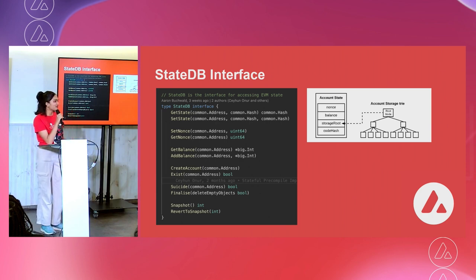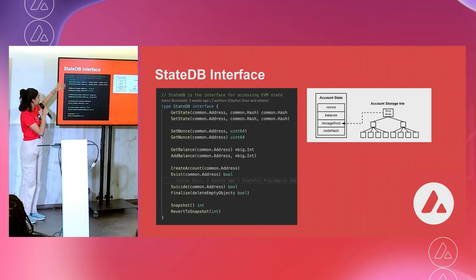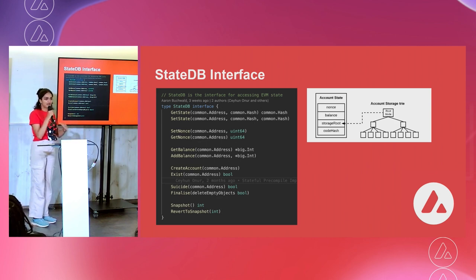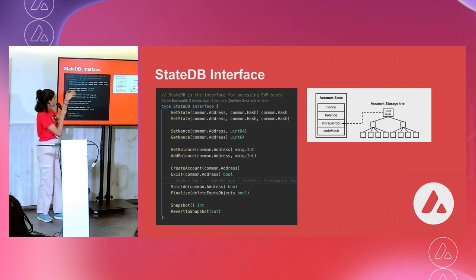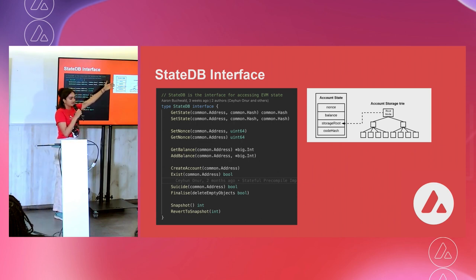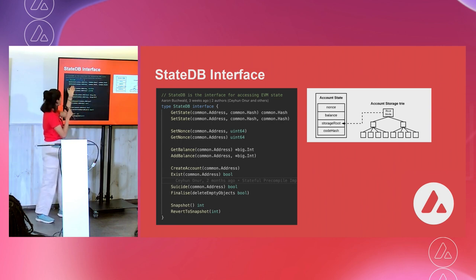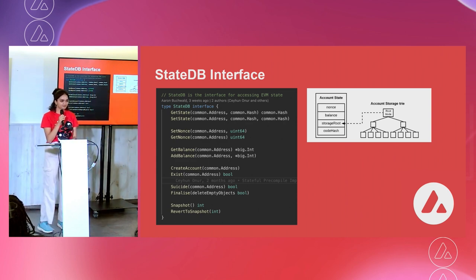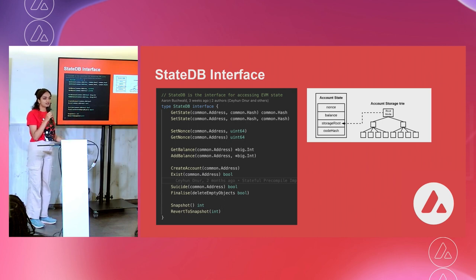We can look at the state DB interface — the interface for accessing EVM state. You can modify nonces, balances, and actual state itself. In the EVM, we have the state trie, which manages all the state of all accounts. When you call get balance or modify balances or nonces, you're simply modifying the state associated with a certain account. If you modify actual state, you also modify the account storage trie. Based on these reads and writes, this is how you can determine the cost of your stateful precompile.